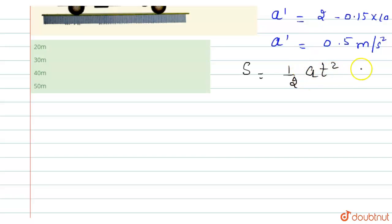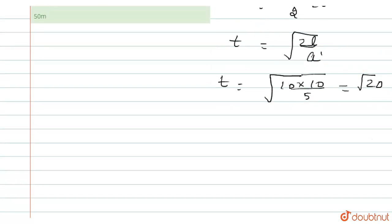In this case, the truck starts from rest. So t equals square root of 2L divided by a'. Now, substituting the values, t equals square root of 10 times 10 divided by 5, which equals square root of 20. And again, we use s equals half at².